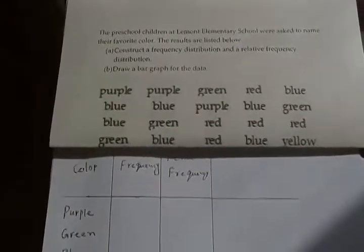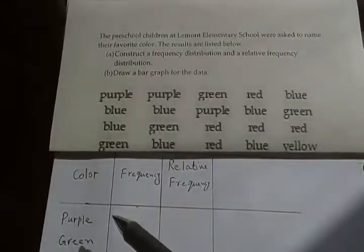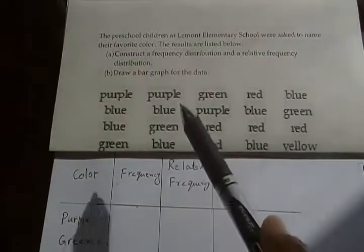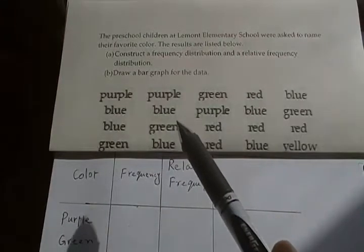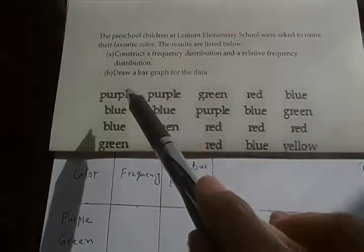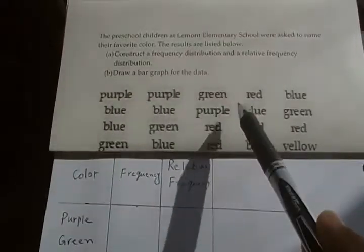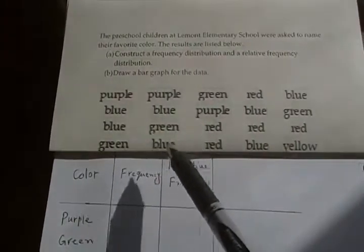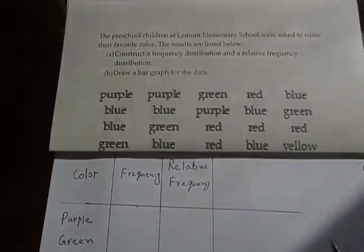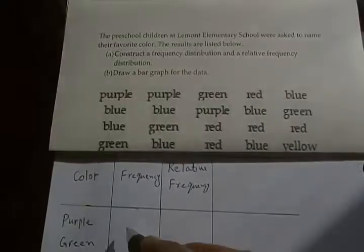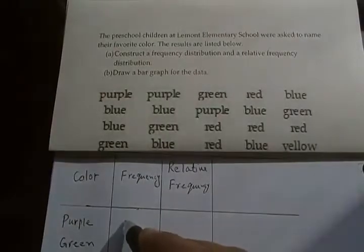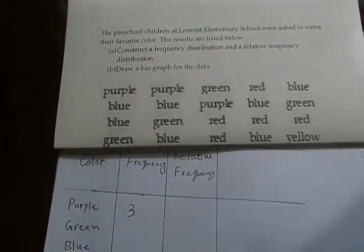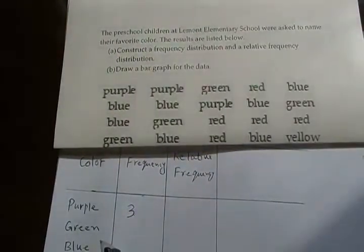Next in the frequency we have to see how many times purple appears in this data. If you count it, purple is 1, 2, 3 - three times. I would write 3 next to purple.